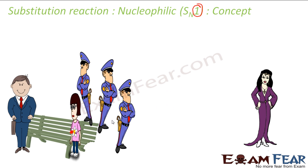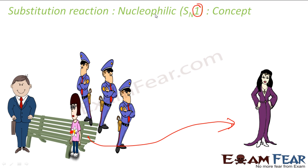The rate-determining step here is this lady leaving. If this rich lady leaves this place, then only this reaction happens. So the rate-determining factor is the rich lady leaving this place, and that is why it is called an SN1 reaction.